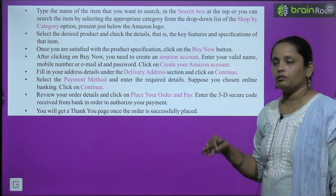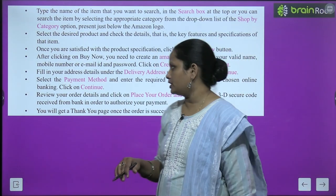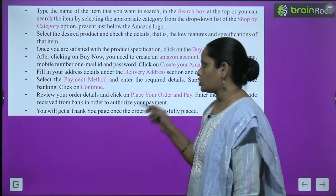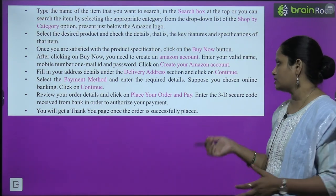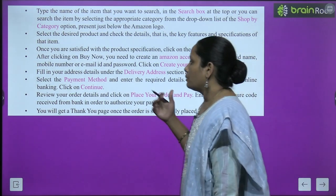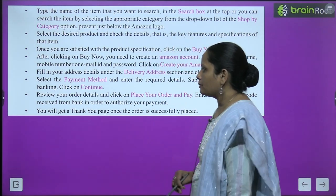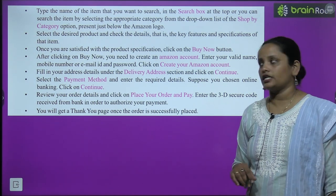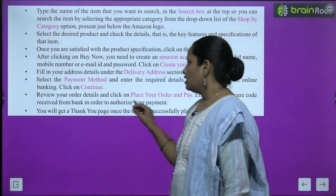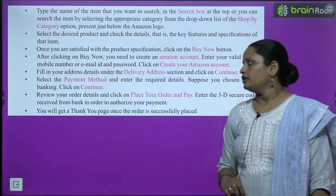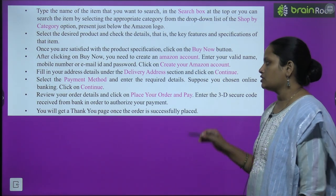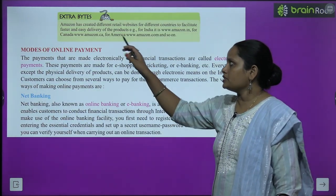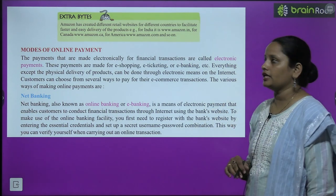Click on 'Create your Amazon account'. Fill in the delivery address details in the delivery address section and click Continue. Then proceed to the payment method, fill in the required details, and if using online banking click Continue. Review your order details, click 'Place your order and pay', and you will receive a 3D secure code from your bank to authorize the payment. Once the order is successfully placed, you will get a thank you page.